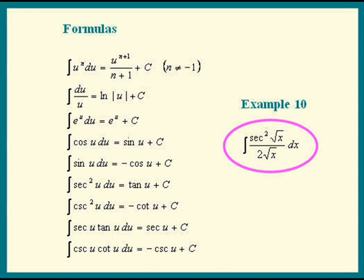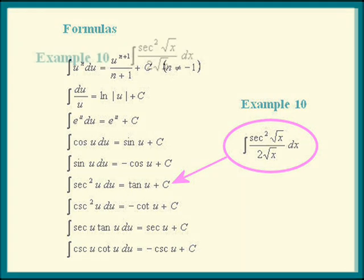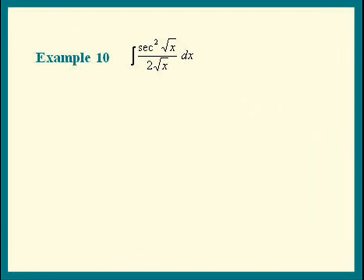Which formula are we going to try? It does look like the secant squared one, so let's give that a try. To use that formula, the integral of secant squared u du would have to be square root of x. So let's pick u to be square root of x and hope that du shows up.